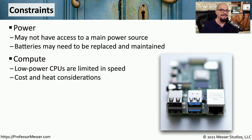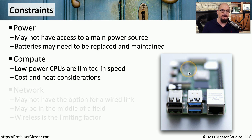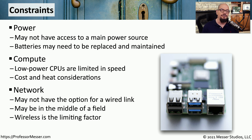This may not necessarily be a bad thing. Lower speed CPUs tend to create less heat, and that may be an advantage, especially for these smaller devices. The location of these embedded devices can also limit what we're able to do from a networking perspective.